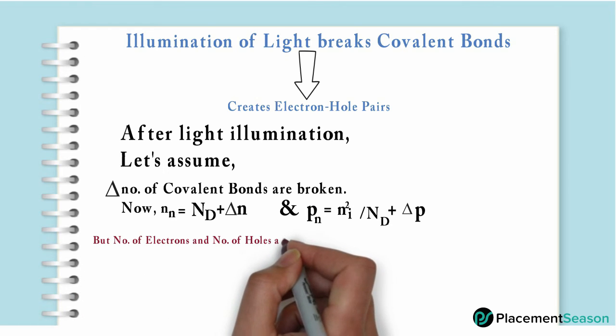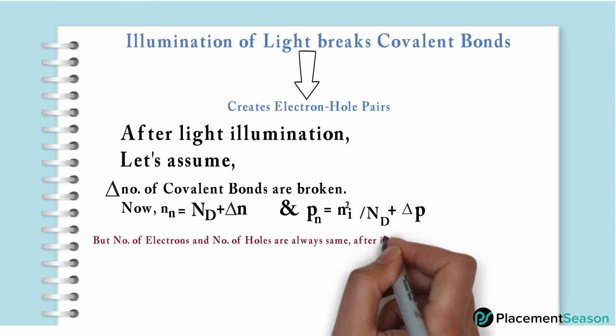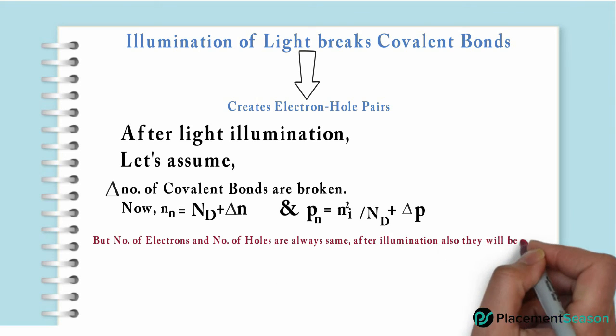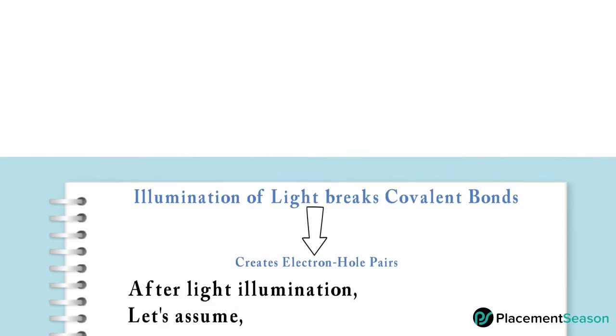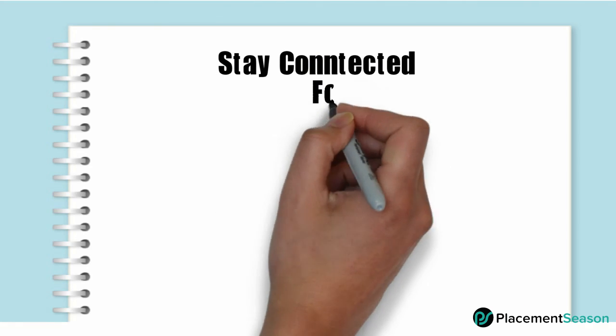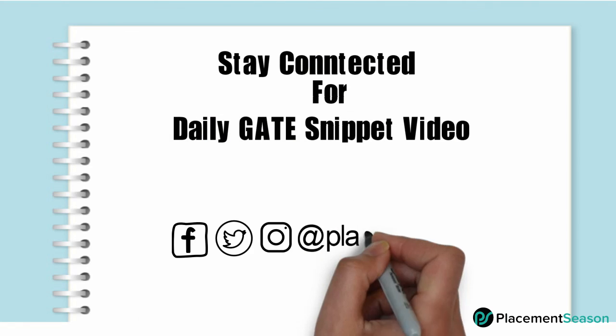The number of electrons and number of holes are always the same. After illumination, extra electrons will be the same as extra holes, and both will be equal to the number of covalent bonds broken. So option C is the correct option. Stay connected with Placement Season for daily GATE snippet videos.